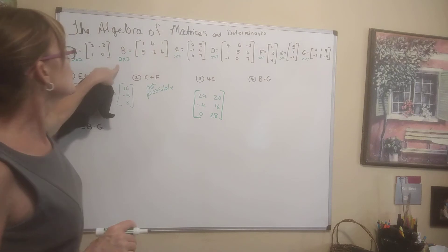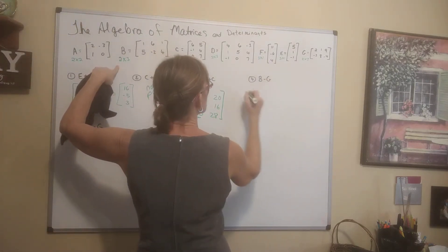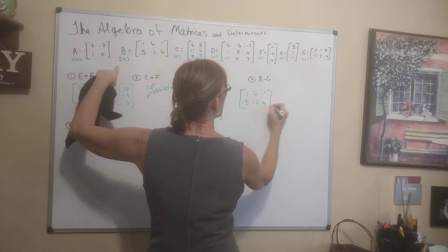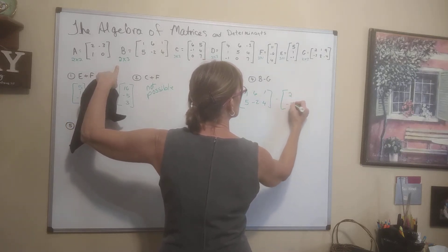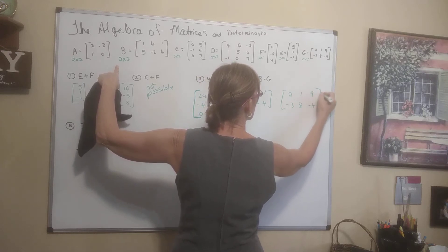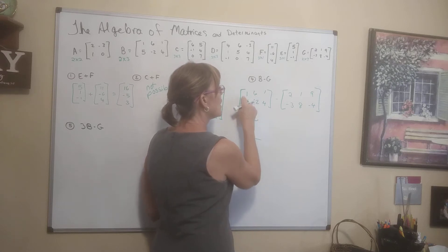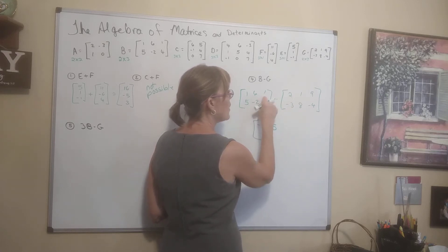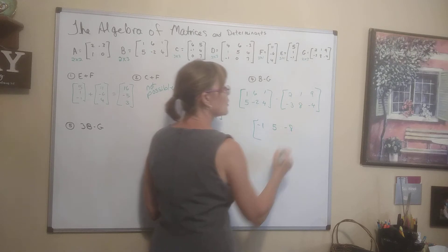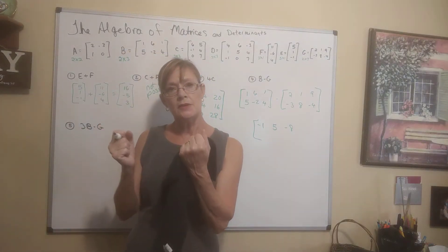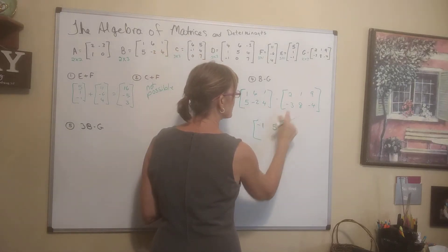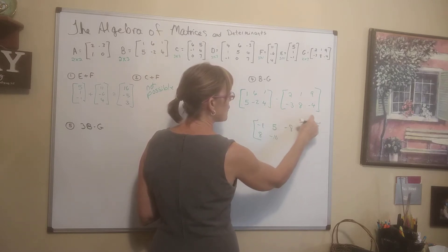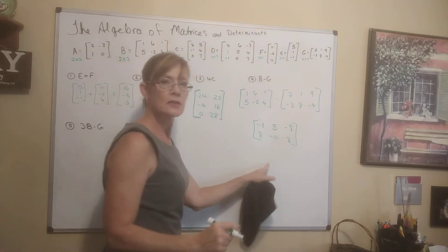B minus G: B is 2 by 3 and G is 2 by 3 — same size, so we can subtract. Taking corresponding elements: 1 minus 2 is negative 1, 6 minus 1 is 5, 1 minus 9 is negative 8. Then 5 minus negative 3 is 8, negative 2 minus 8 is negative 10, and 4 minus negative 4 is 8.